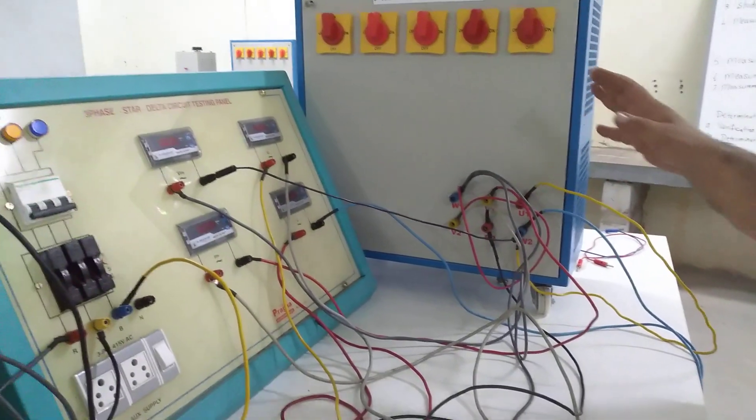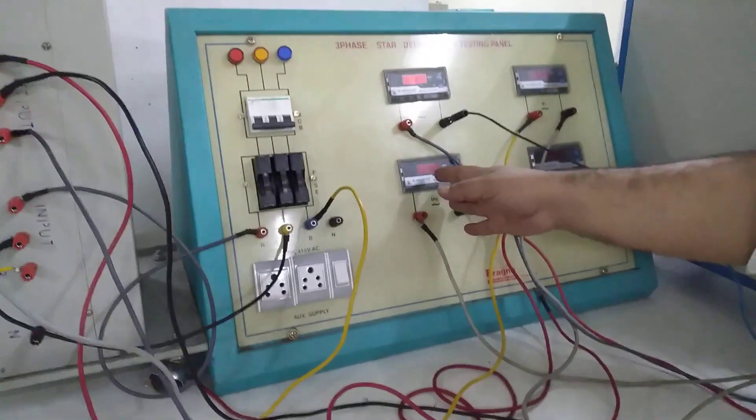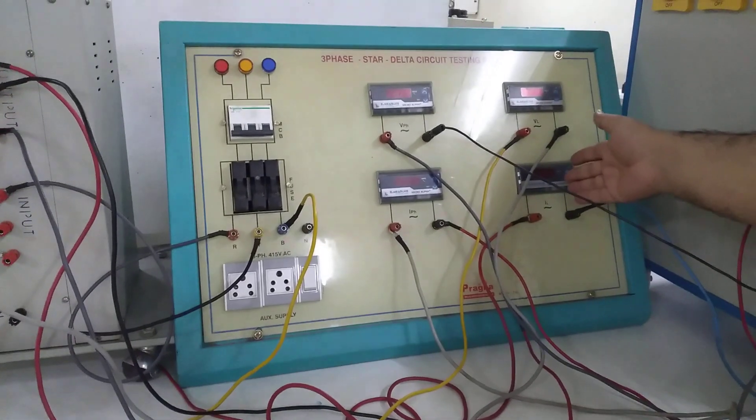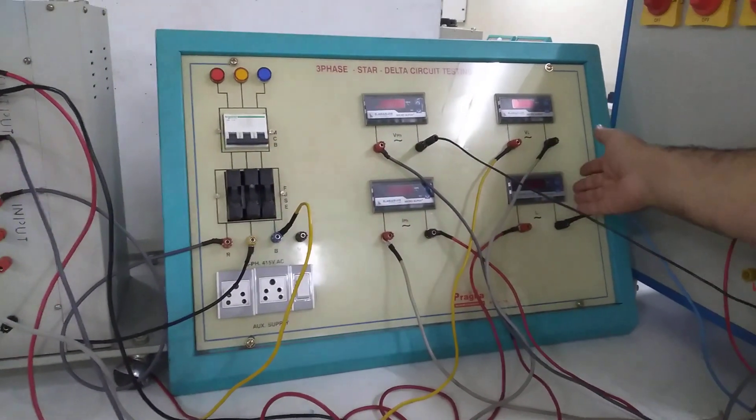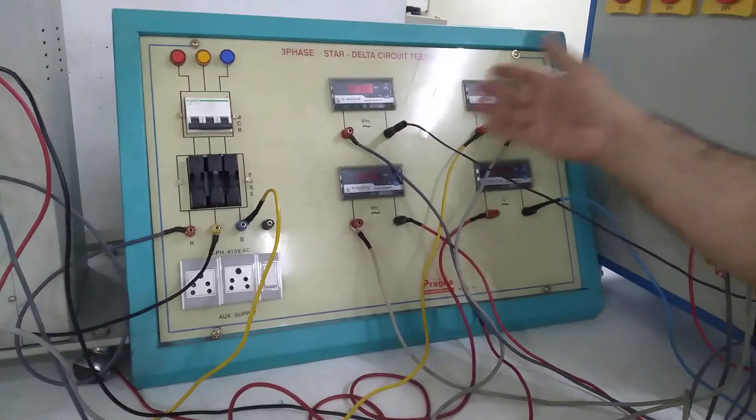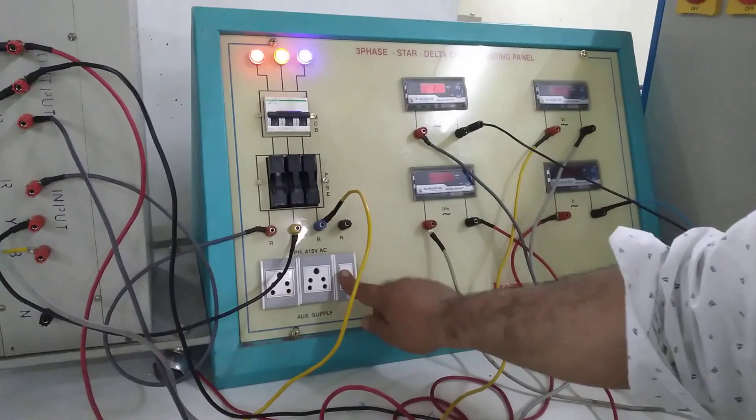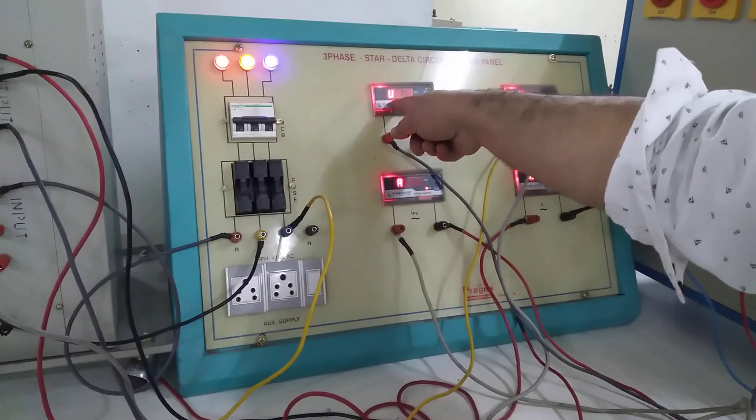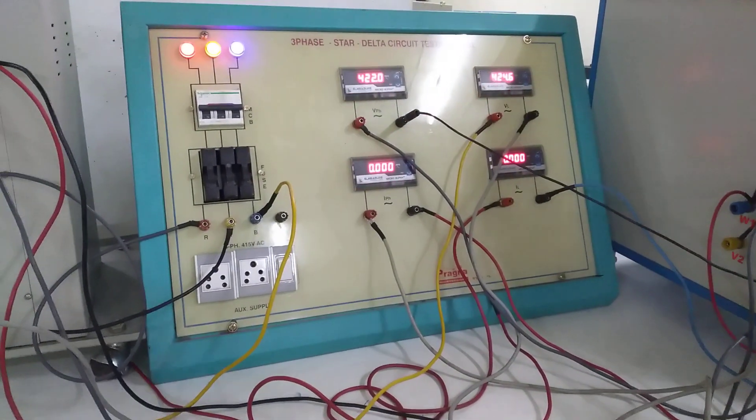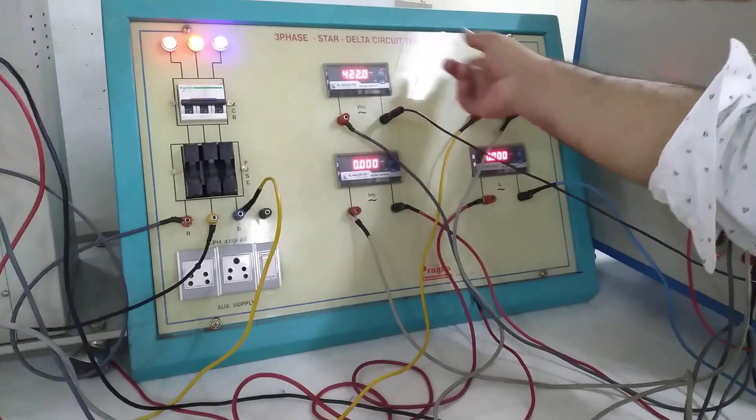In the delta connection, my V phase should be equal to my V line, and my I line should be equal to root 3 times I phase. Or I line should be root 3 times I phase, or I phase should be I line by root 3. So I am going to switch on the circuit. Just observe the voltages here. If you look at this, this is 422 and this is also same, almost same.